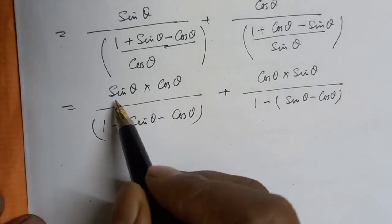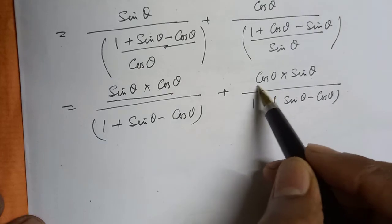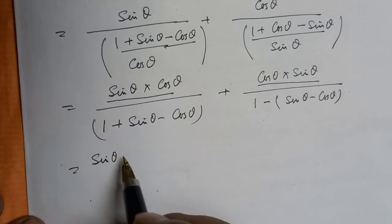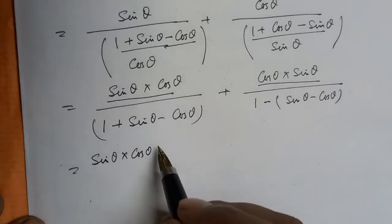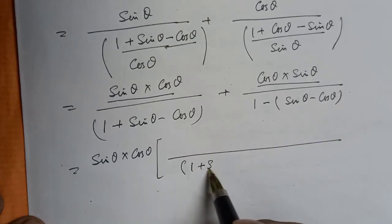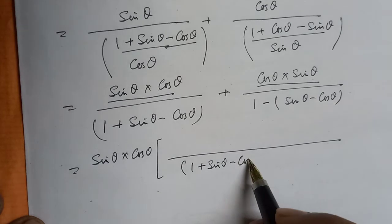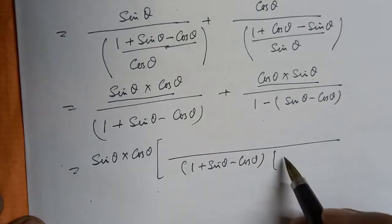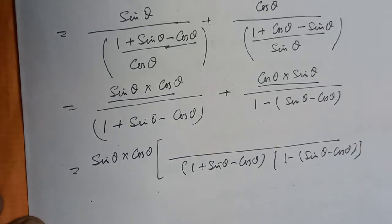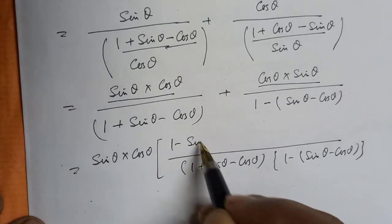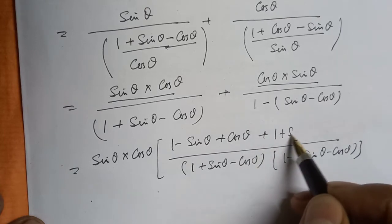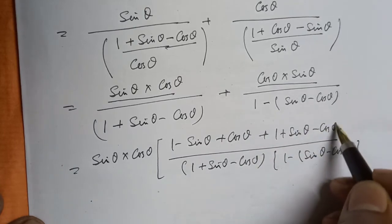Taking sinθ·cosθ as common, we get sinθ·cosθ multiplied by [1/(1 + sinθ - cosθ) + 1/(1 - sinθ + cosθ)]. The numerator becomes: (1 - sinθ + cosθ) + (1 + sinθ - cosθ).